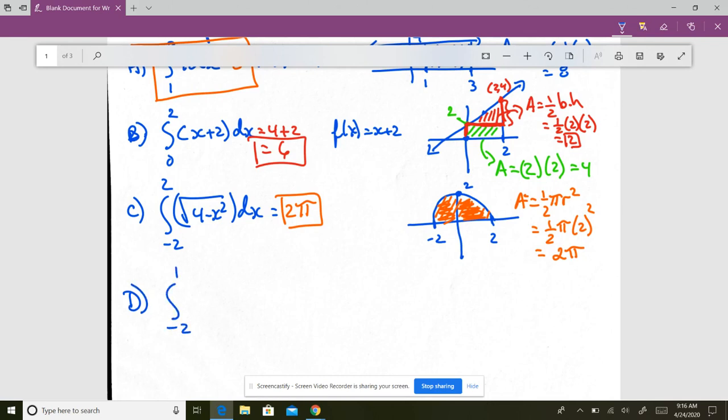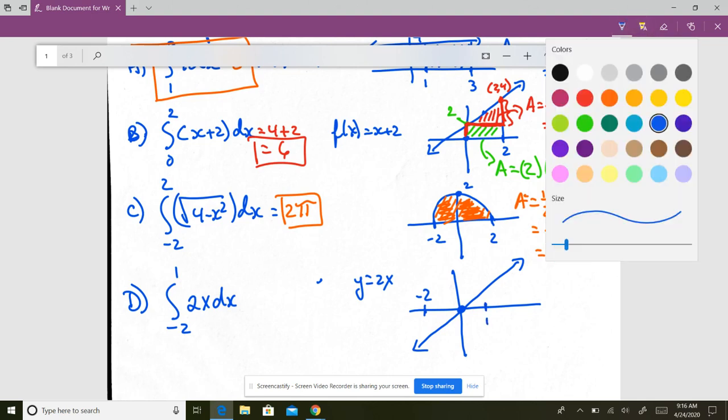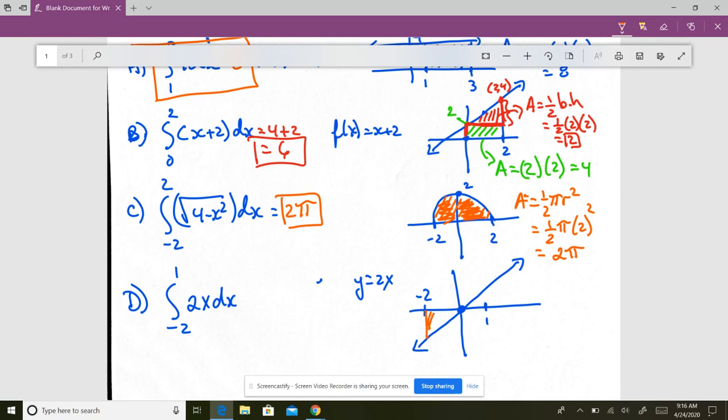So we're doing integral negative 2 to 1. What does that graph look like? That is essentially the graph of y is equal to 2x, which has x-intercept at the origin and a slope of 2 over 1, essentially like that. We're going from negative 2 to 1. So now we have two parts. The area always goes back to the x-axis.